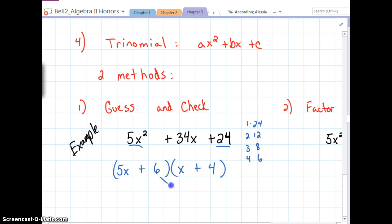What you're going to check is, okay, 6 times x is 6x. 5x times 4 is 20x. When you add those together, you get 26x. That's not what we're looking to get. We're looking to get 34x.